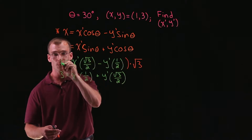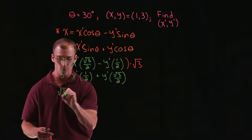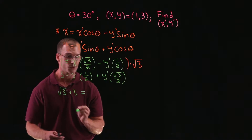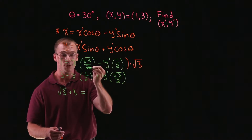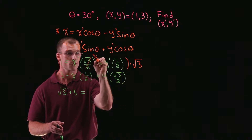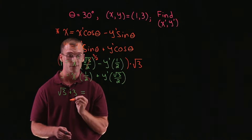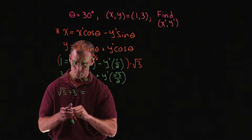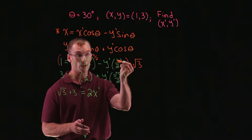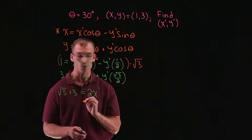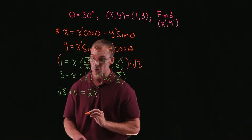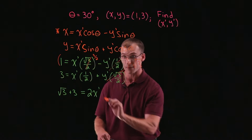Root 3 all the way through on the left gives us root 3 plus 3. On the right, root 3 times root 3 over 2: the root 3s cancel, leaving 3 halves. Then 3 halves plus 1 half gives us 4 halves, or 2. So that's 2x prime. And the y prime terms — negative y prime root 3 over 2 and positive y prime root 3 over 2 — cancel and give us zero.